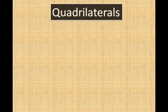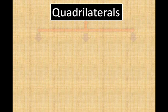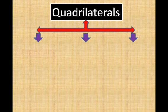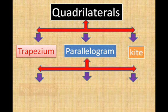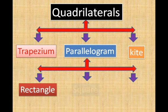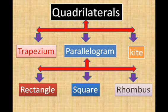Quadrilaterals can be broadly divided into three categories: trapezium, parallelograms, and kite. Again, parallelograms can be divided into rectangle, square, and rhombus. We will see the individual properties in the coming slides.